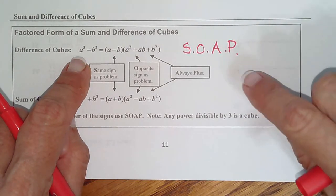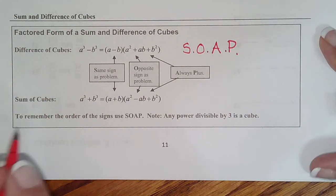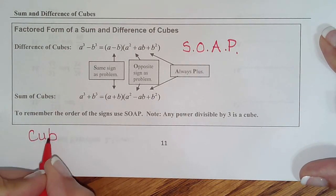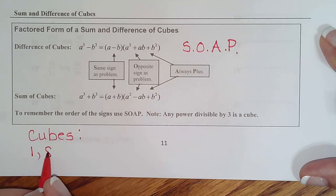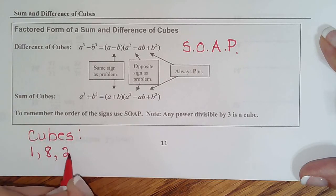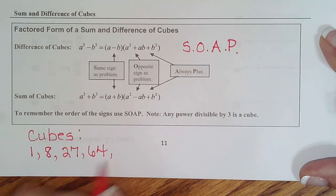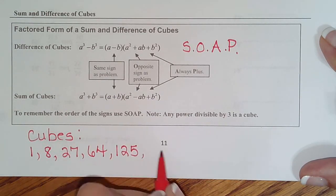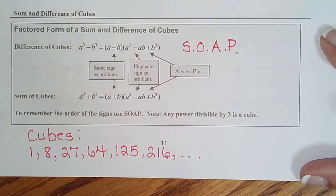And the numbers will be cubes like 27, which is 3 times 3 times 3. Or 64, which is 4 times 4 times 4. Or 8, which is 2 times 2 times 2. In fact, let's go down here and just write the first 5 or 6 cubes. So 1 cubed is 1. 2 times 2 times 2 is 8. 3 times 3 times 3 is 27. 4 times 4 times 4 is 64. 5 times 5 times 5 is 125. And you might see the 6. So let's do it. 6 times 6 times 6 is 216.